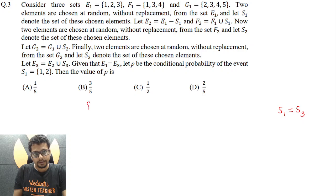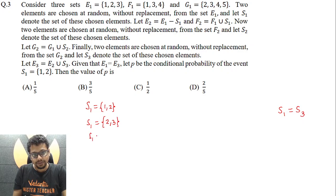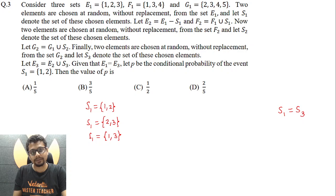S1 can be {1,2}, or S1 can be {2,3}, or S1 can be {1,3}. There is 1/3 probability for each of these three possibilities.